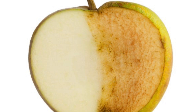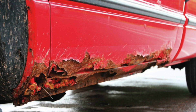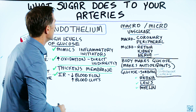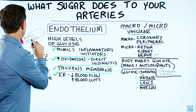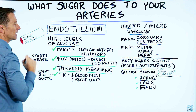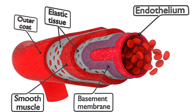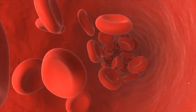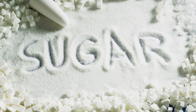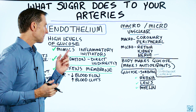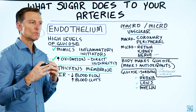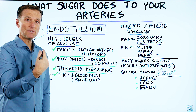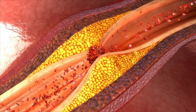Sugar creates all sorts of oxidation. You can think about it like an old car that has rust on it — the same thing happens inside your arteries. They start to oxidize and you start seeing damage. The layer on the inside of the blood vessel is called the endothelium. The endothelium controls the tone of the blood vessels, prevents certain things from invading, and acts as a barrier. It's highly sensitive to too much sugar. High levels of glucose mimic inflammatory initiators, so glucose creates inflammation in the arteries — that's the very beginning of a sequence of events that end up as a blockage.